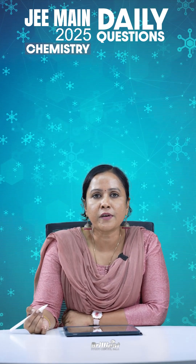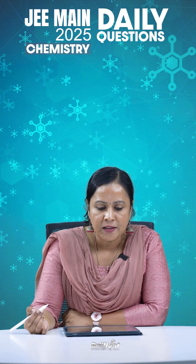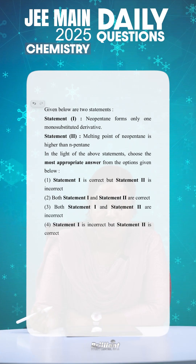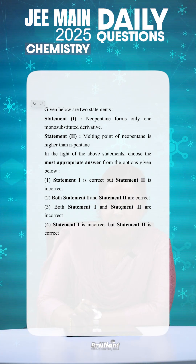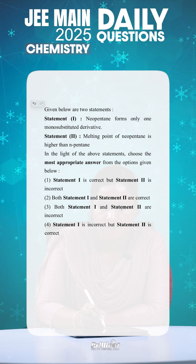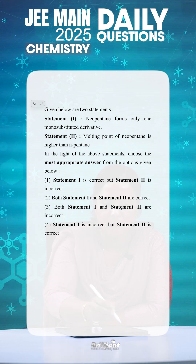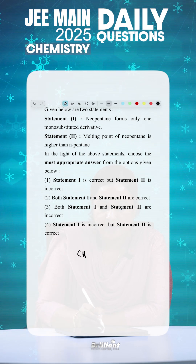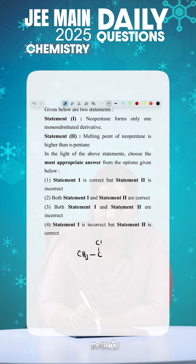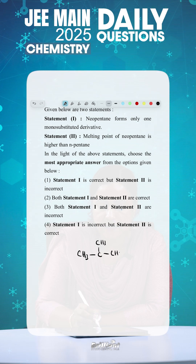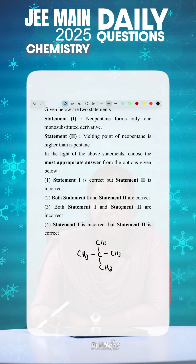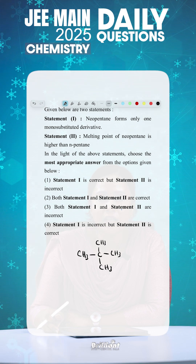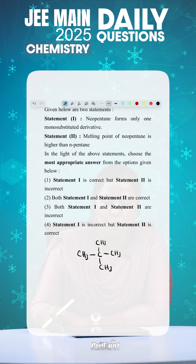Hello students, today we have a question from April 2025 evening shift. The question involves two statements. Statement one: neopentane forms only one mono-substituted derivative. The structure of neopentane is C(CH₃)₄ — a central carbon with four CH₃ groups. The terminal CH₃ groups have replaceable hydrogens, and all carbon atoms are equivalent, so it can form only one mono-substituted derivative.